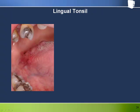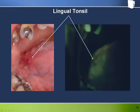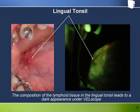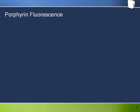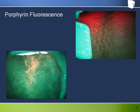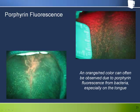After seeing the pronounced loss of fluorescence associated with lymphoid tonsillar tissue, it should be no surprise that the lingual tonsils also present quite darkly under fluorescence visualization. Here we see two examples of the orange-red color from the porphyrin fluorescence generated by bacteria. The tongue is the area most commonly observed, and it's quite common for bacteria to get trapped amongst the carpet of filiform papilla or in the fissures that can sometimes develop.